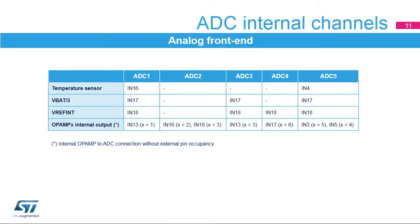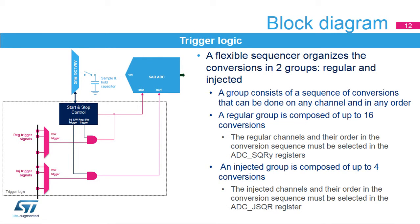This table indicates the internal analog channels for the five ADCs. Conversions are organized in two groups: the regular group and the injected group. The injected group can preempt the execution of the regular group sampling sequence. The user selects the size of each group — maximum 16 acquisitions in the regular group and four in the injected group — and assigns the analog channels for each sampling. Each group has its own trigger logic. The trigger can be an external signal from GPIOs or timer outputs, or a sequence of acquisition can be triggered by software.